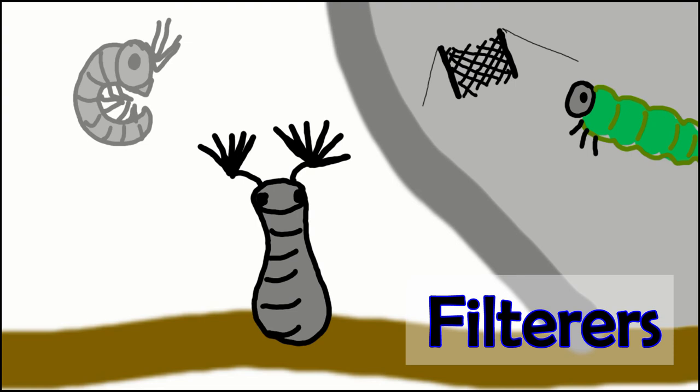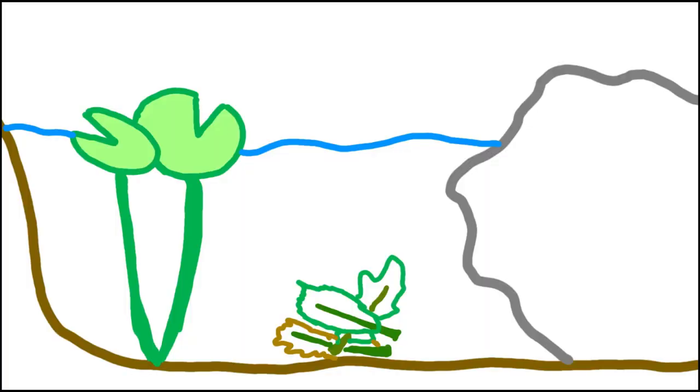The scud is an active swimmer and will swim through the water as it eats fine particles. I'm glad we have each of these macroinvertebrates living together harmoniously.